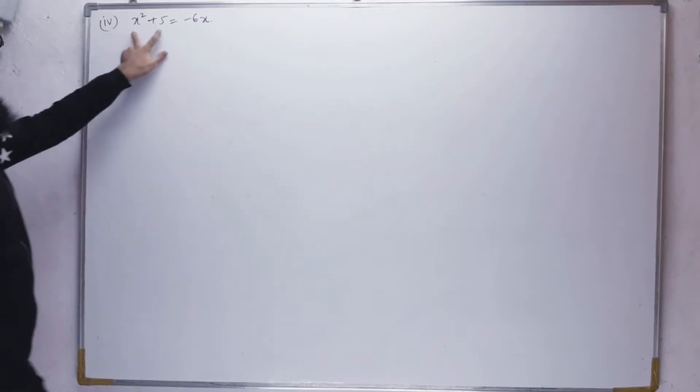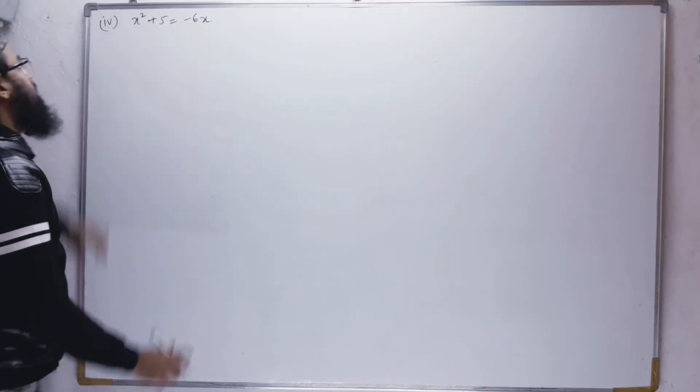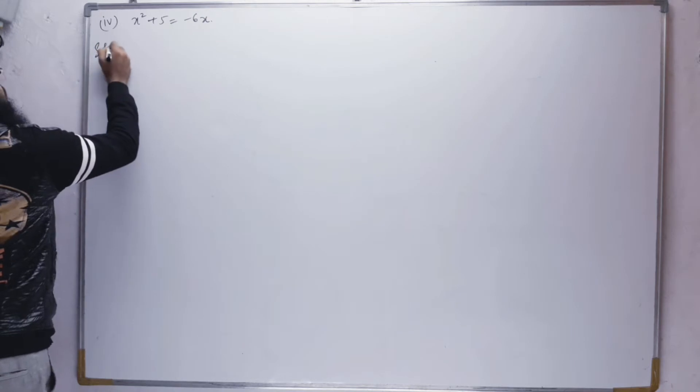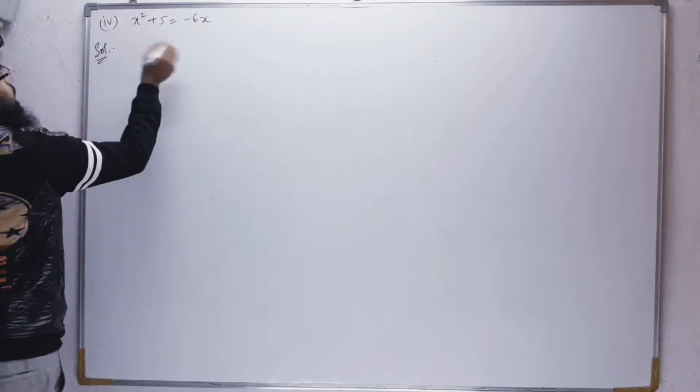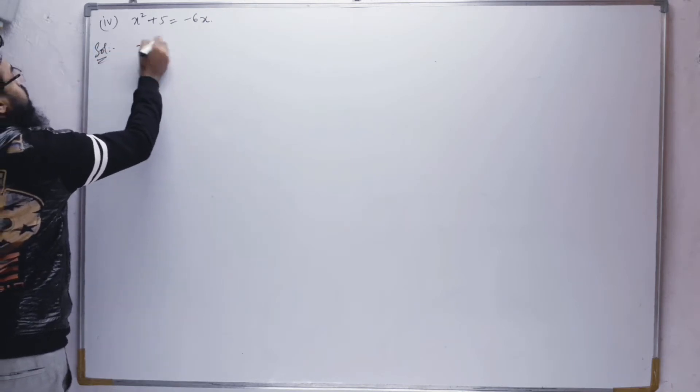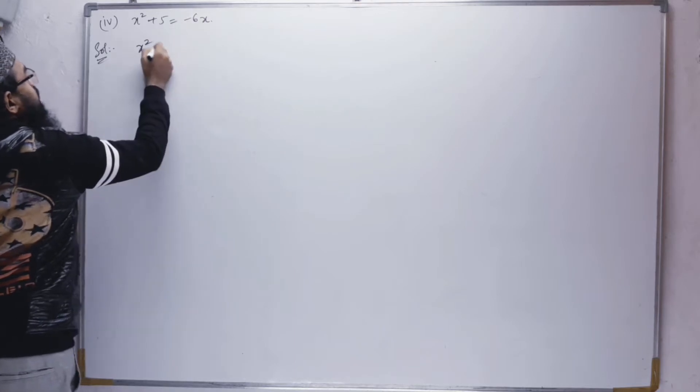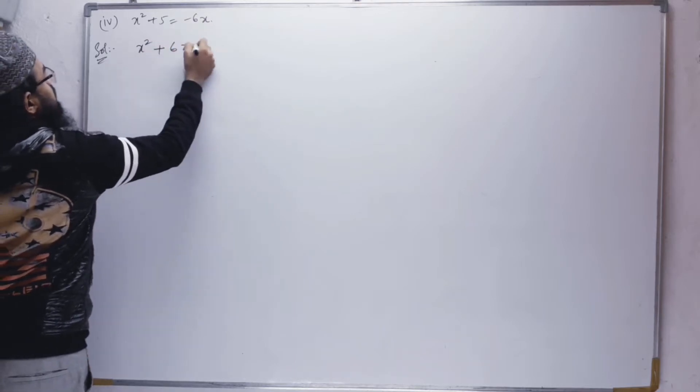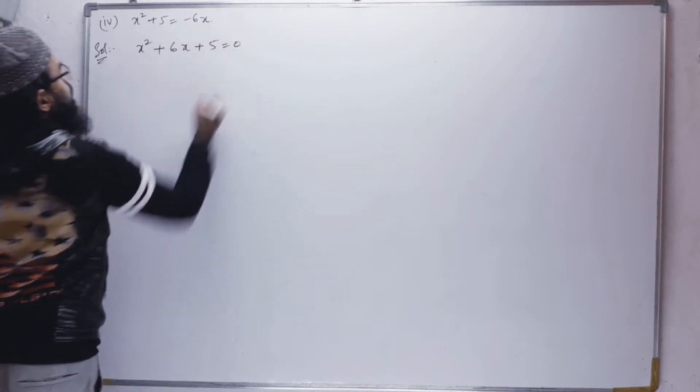Fourth problem: x² + 5 = -6x. First we will write this in the correct order. So x² plus 6x plus 5 equals 0.